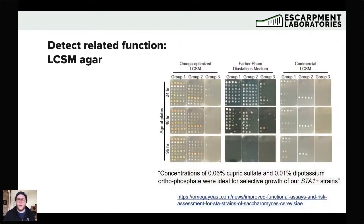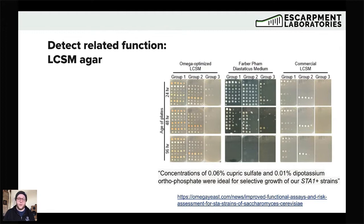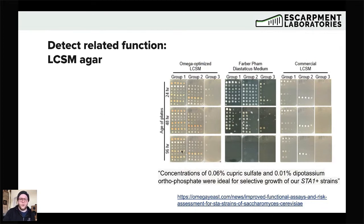Also wanted to highlight some recent research shared by our friends at Omega Yeast Labs in Chicago. They did some work tweaking LCSM to increase sensitivity for recovering yeasts resistant to copper. They made adjustments to the copper sulfate and dipotassium phosphate concentrations and swapped out one of the other salts in the recipe — that's in their paper, available on their website. That seems promising, especially when talking about making sure that medium remains useful for longer than 24 to 48 hours.